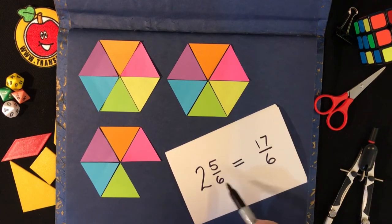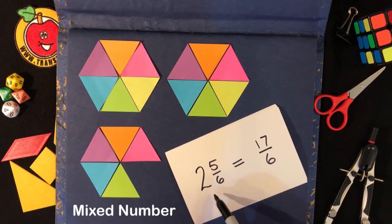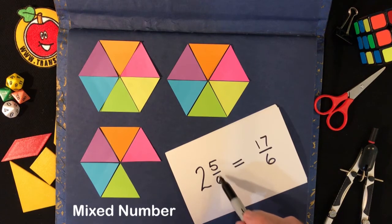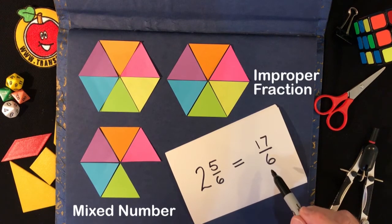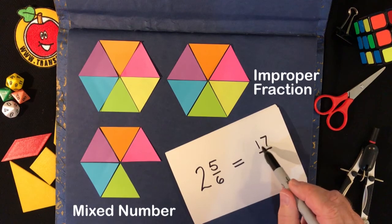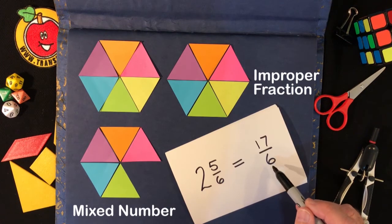So both of them mean the same thing. We call this a mixed number because there's whole number parts as well as a fraction and we call this an improper fraction because the numerator at the top is bigger than the denominator at the bottom.